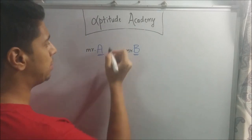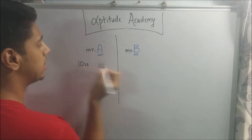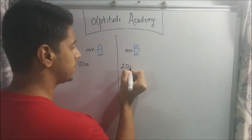Now to understand ratios, let us keep two people. We have Mr. A and we have Mr. B. Suppose Mr. A has Rs. 10, and Mr. B has 20 rupees.